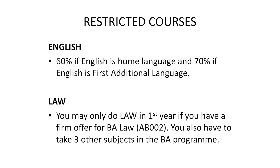Restricted courses include the following. For English, you must obtain 60% in English as a home language, and you must obtain 70% in English as a first additional language. If you decide to do Law, you need only Law in the first year if you have a firm offer from the BA Law program, which is AB0002.